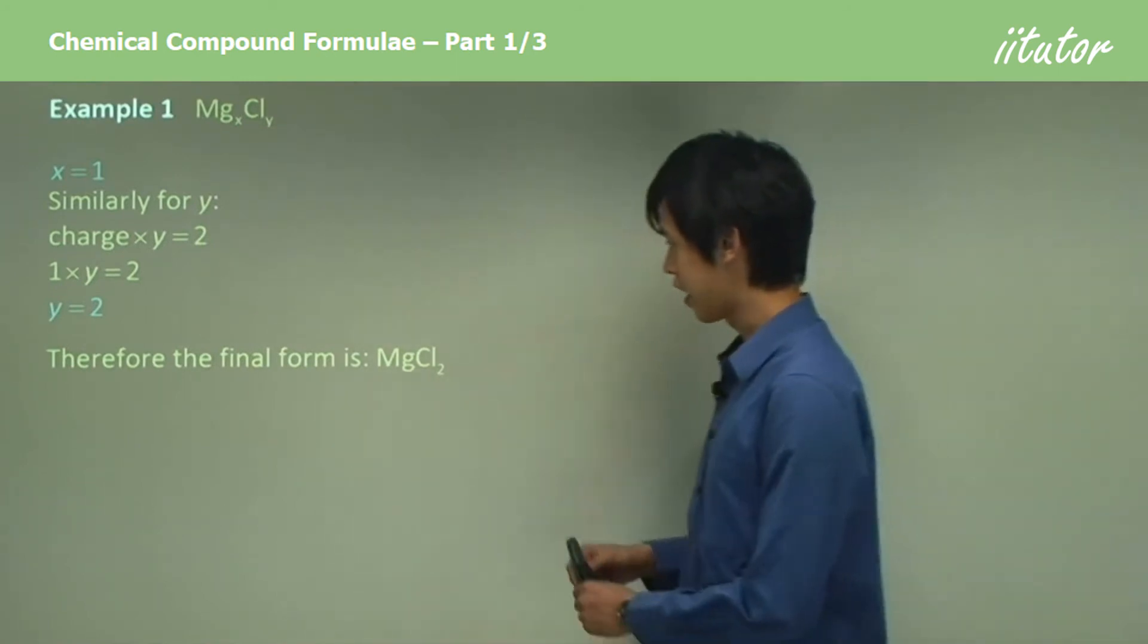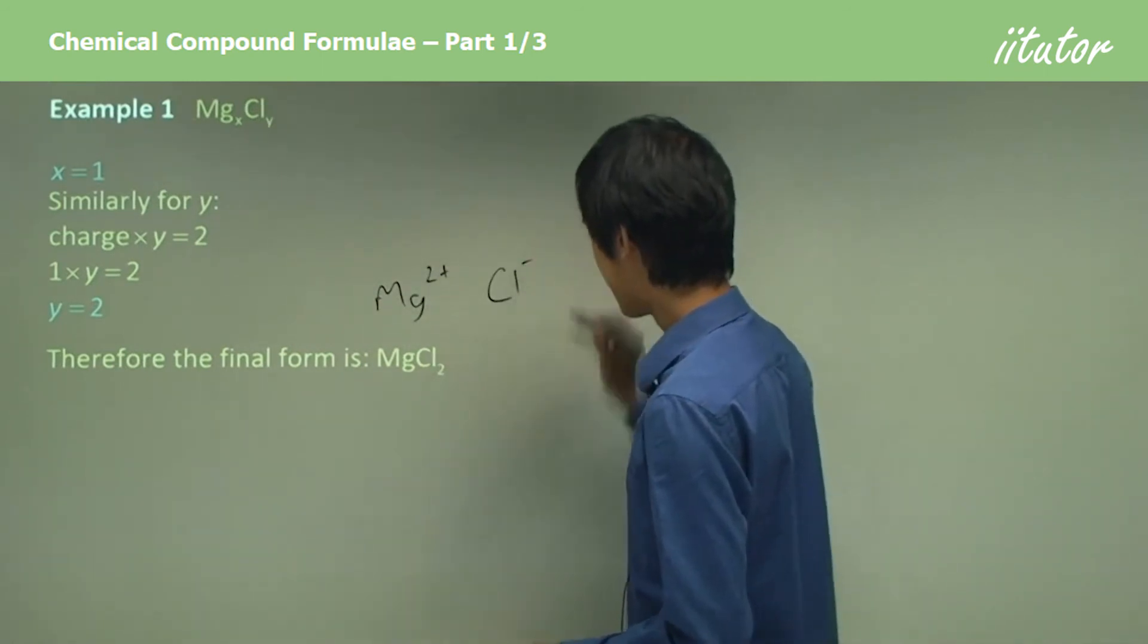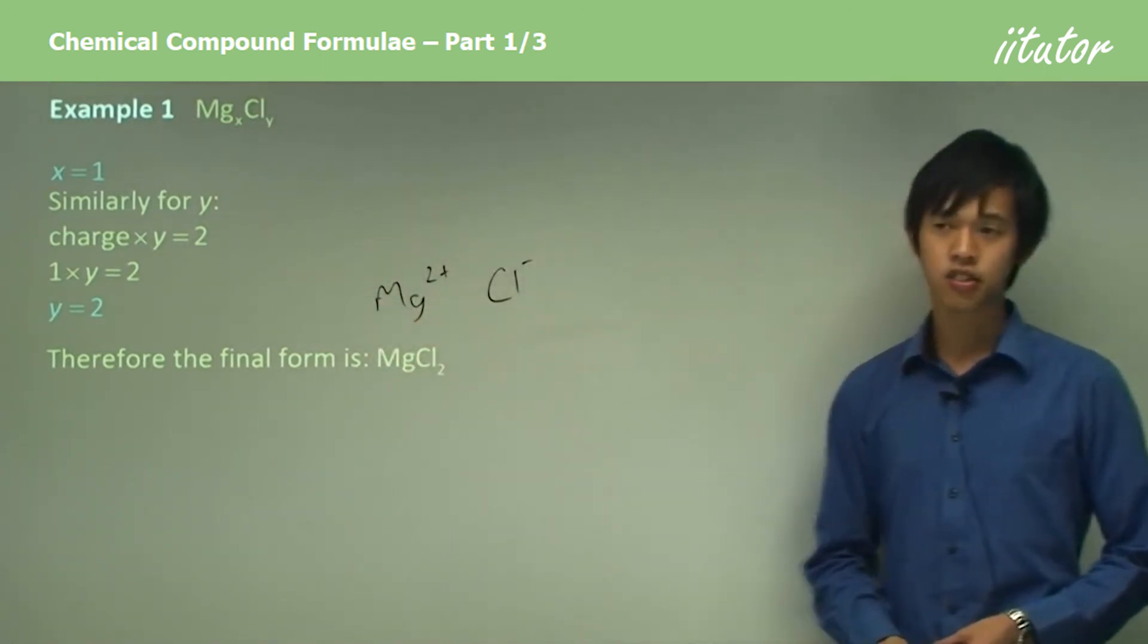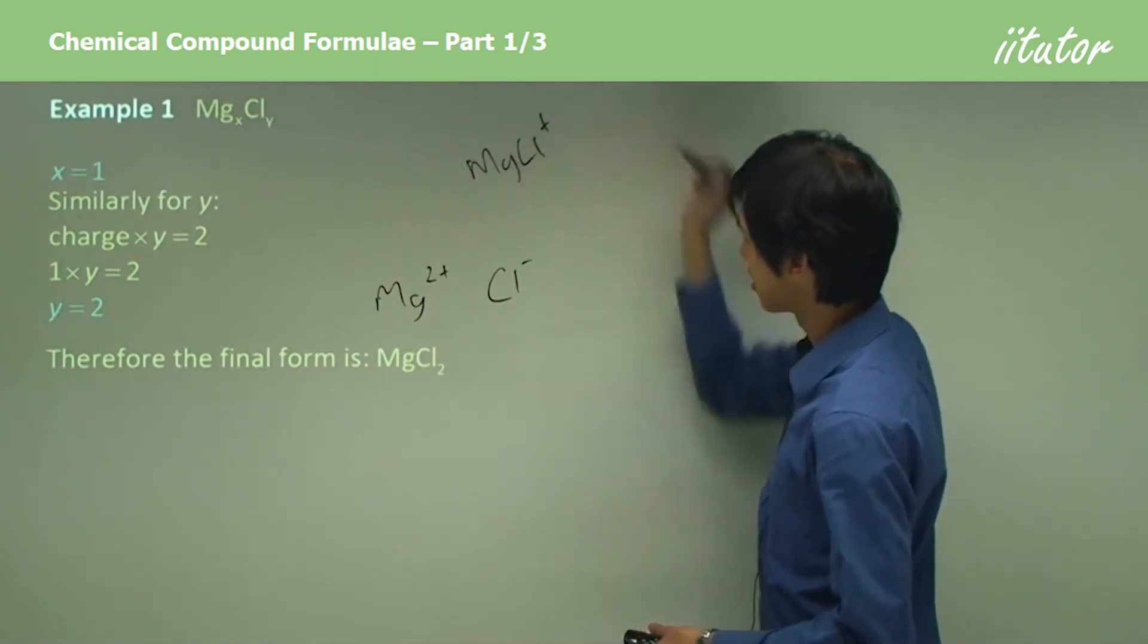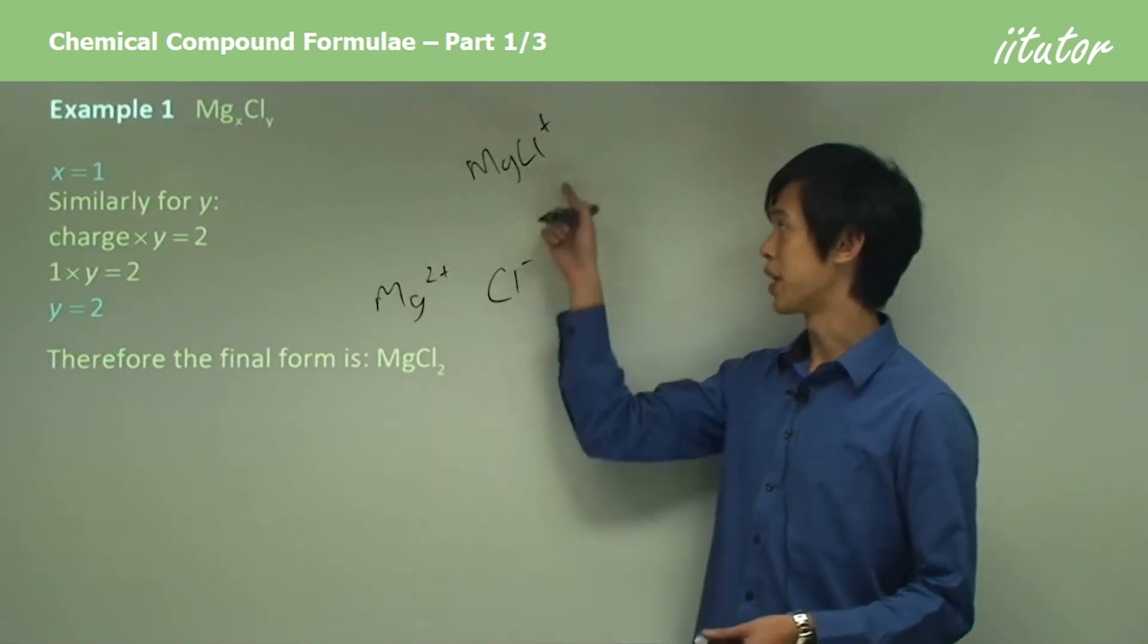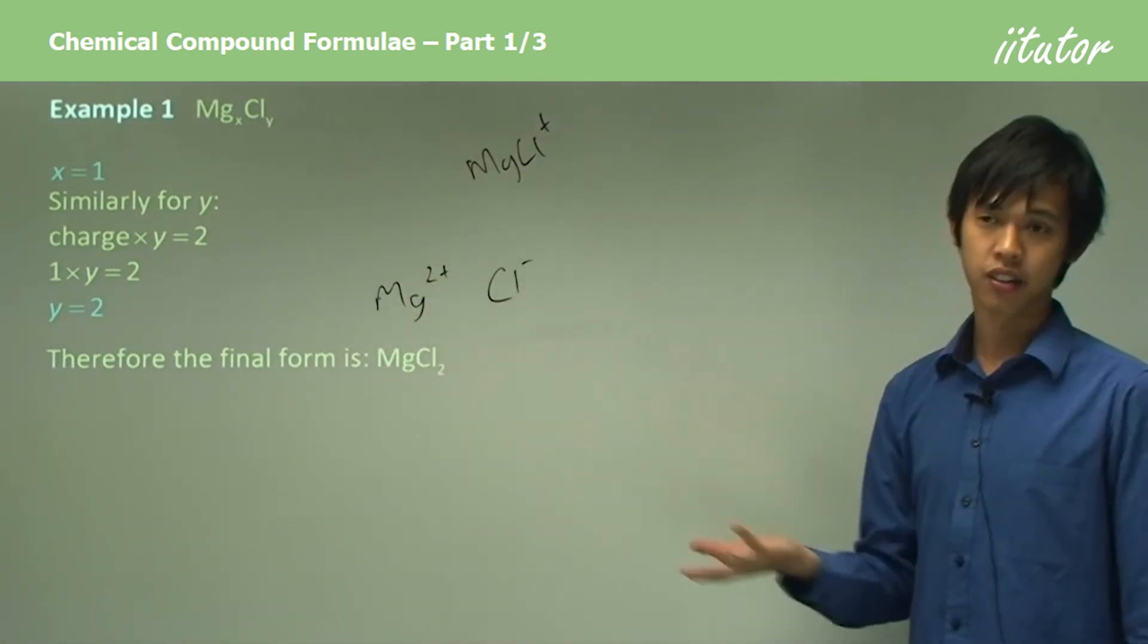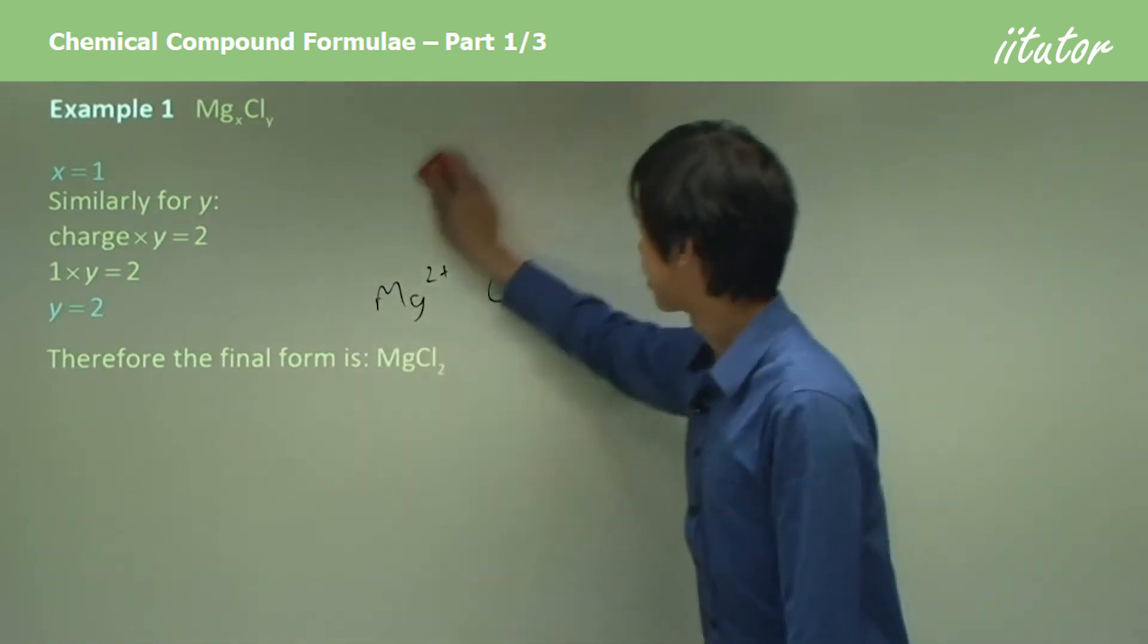You can see that if we have this Mg2+ and Cl-, if we were just to put them together straight away, you would have MgCl plus. You see the charges don't go to zero, and that's why we needed two Cl ions for every one Mg ion. You can see that from the electrically neutral principle.